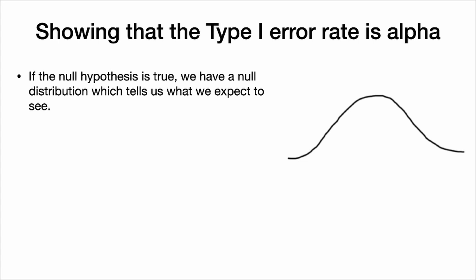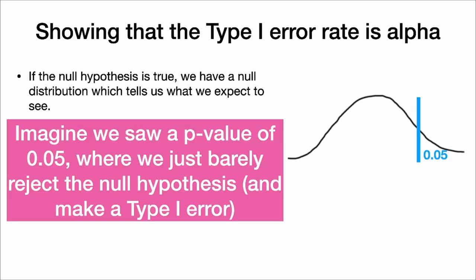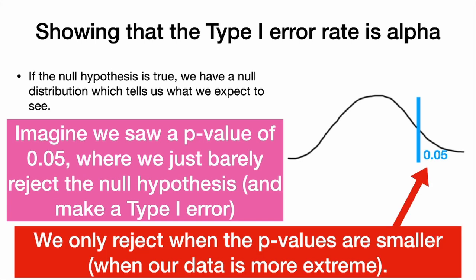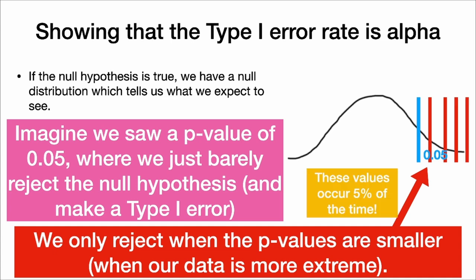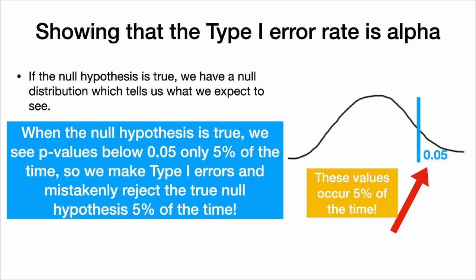If the null hypothesis is true, we have a null distribution that tells us what we expect to see. If we see a p-value of 0.05, we just barely reject the null hypothesis and make a type 1 error. We only reject when p-values are smaller than 0.05 — when our data is at least as extreme as that value. These extreme values occur 5% of the time because the probability of being in that tail is 5%. So when the null hypothesis is true, we see p-values below 0.05 only 5% of the time, meaning we mistakenly reject the true null hypothesis 5% of the time.